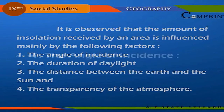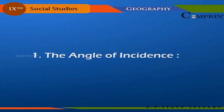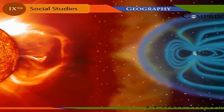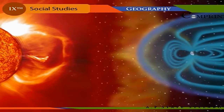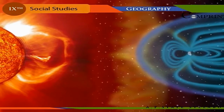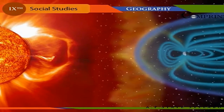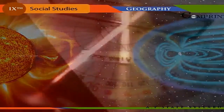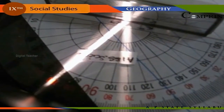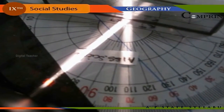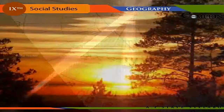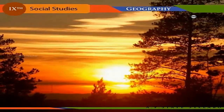The angle of incidence: the inclination of the Sun's rays affects the amount of solar energy reaching the Earth's surface in two ways. If the angle of incidence is high, the intensity of insolation is greater.